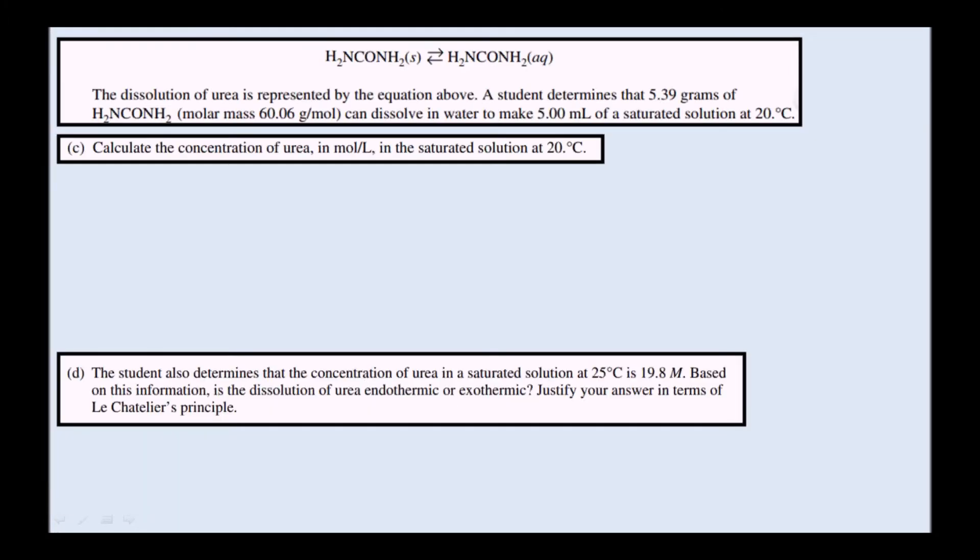The dissolution of urea is represented by the equation above, so urea solid is in equilibrium with urea aqueous. A student determines that 5.39 grams of urea (molar mass 60.06 grams per mole) can dissolve in water to make 5 milliliters of a saturated solution at 20 degrees Celsius. Part C wants us to calculate the concentration of urea in moles per liter in the saturated solution at 20 degrees Celsius.